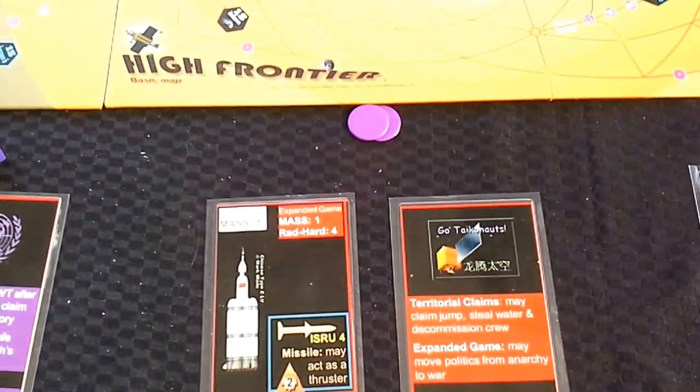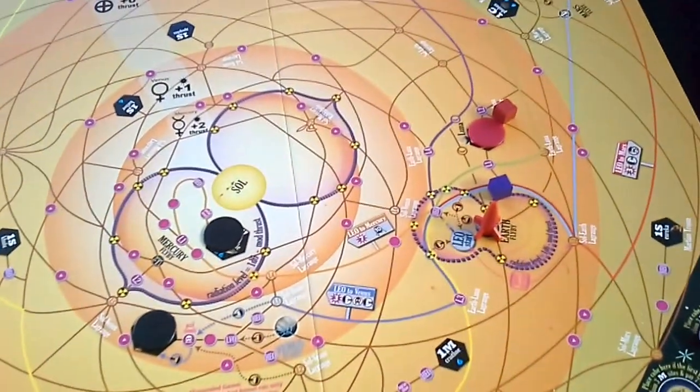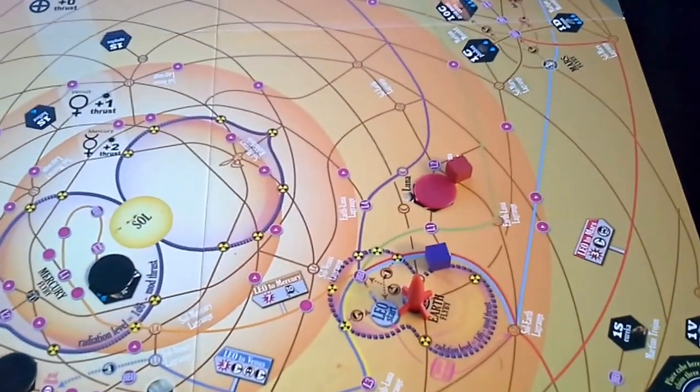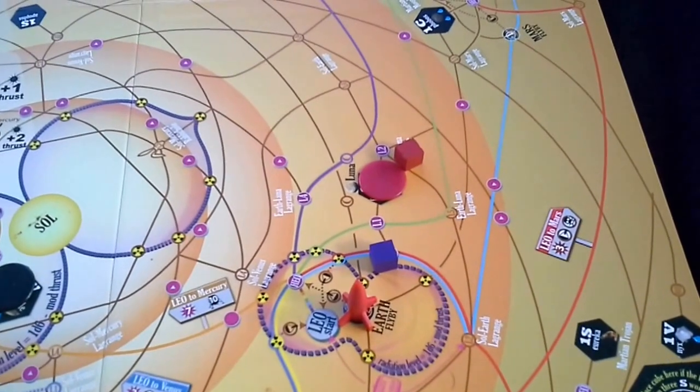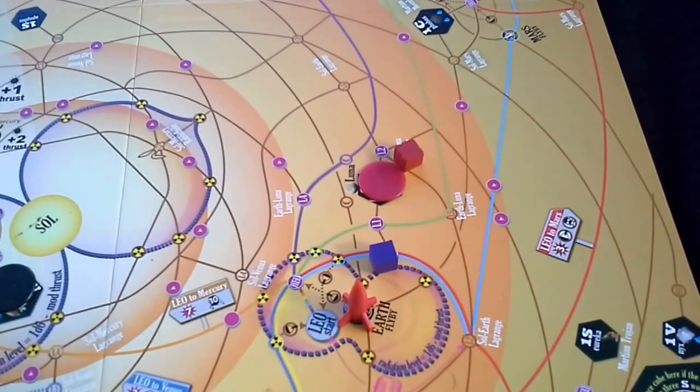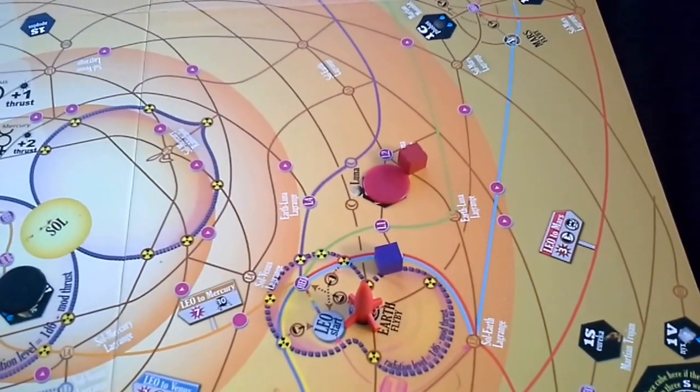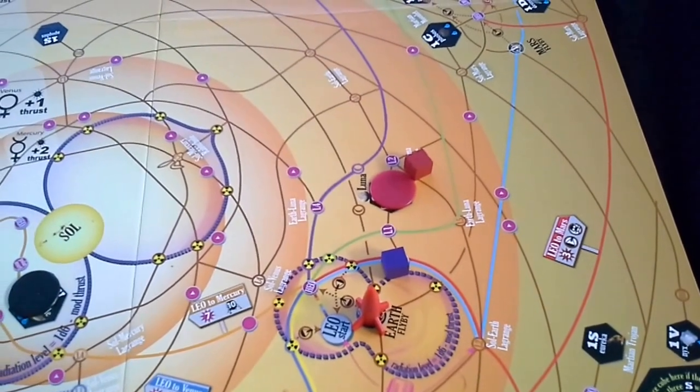So taking a look at Adam's situation, Adam was the last to get into orbit in this game. He took quite some time. And when he did, he eventually got to the moon and made a successful claim there and industrialized.